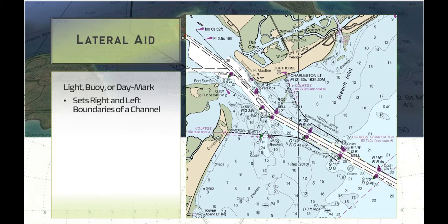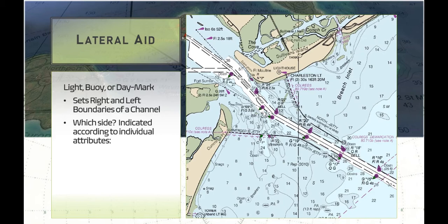Each lateral aid can be taken individually. You can remove it from the entire context of any other aids around it and that individual marking by itself is going to tell you whether it's marking the left or the right side of the channel. It has a color — it's going to be either green or red — and this applies to both the paint and any light. If it's a lighted aid with a light that shines or flashes at night, that color is going to match.